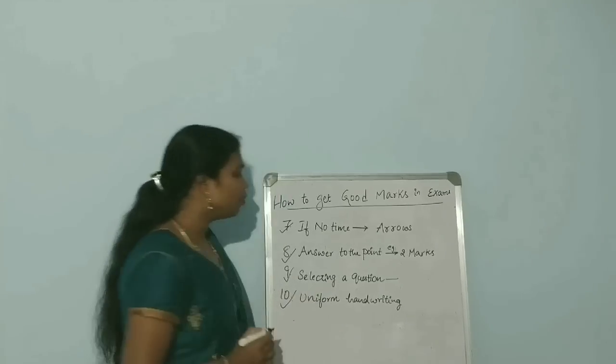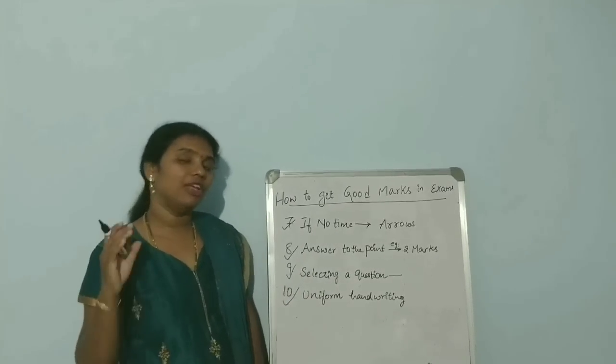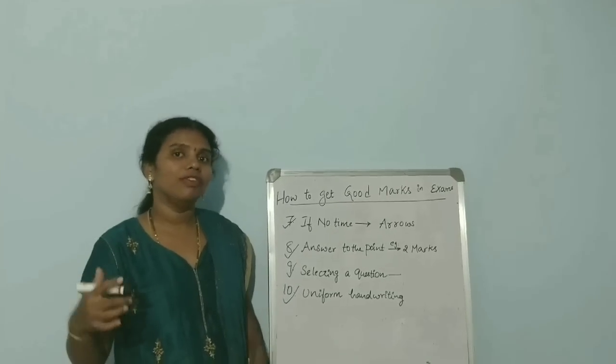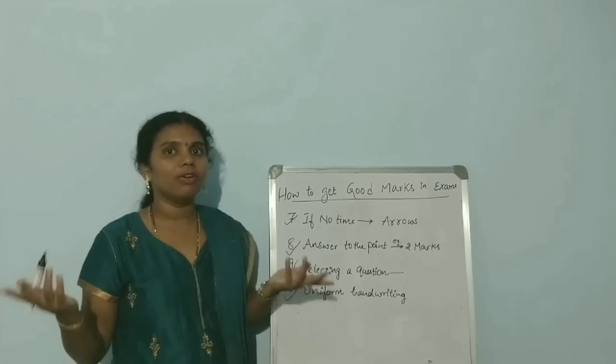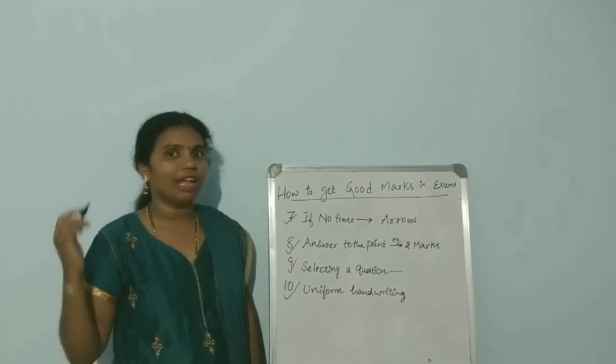The next point is uniform handwriting. Some students will have very good handwriting at the start of the paper, but by the end, it will not be legible. It will not be understood by the examiner or evaluator. So try to maintain uniform handwriting from the start of the answer sheet to the end.